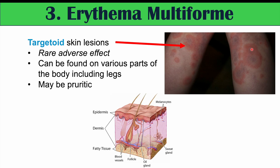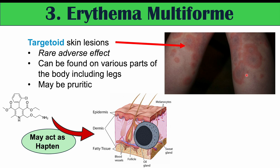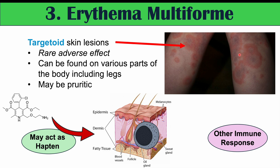We can see multiple of these bullseye-like lesions. The reason this occurs is not entirely understood, but it is believed that amlodipine may act as a hapten — a compound that binds to a protein and leads to an immune response. It's hypothesized that in some individuals, amlodipine binds to certain proteins in the skin, inducing an immune response that brings in immune cells like T cells, resulting in these lesions. It may also be due to other immune responses as well, suggesting an overall immune-related effect.